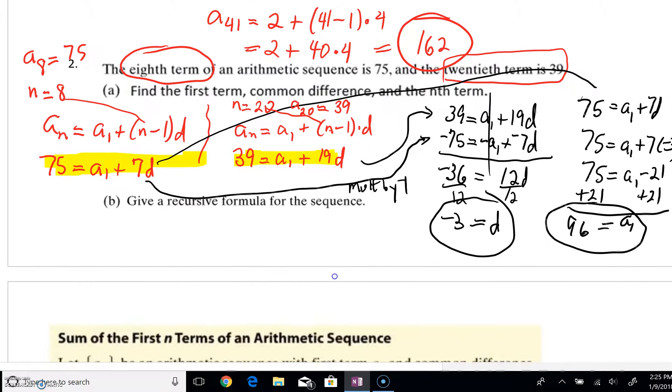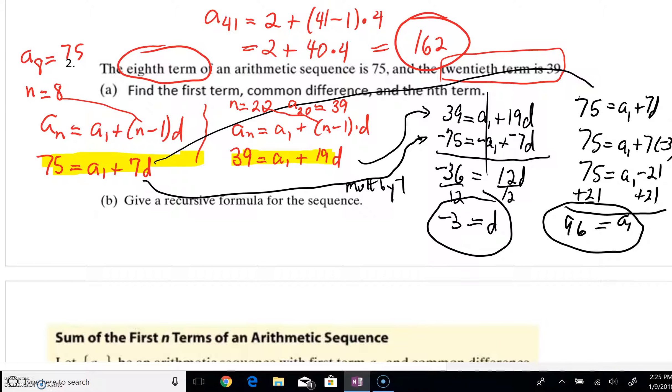Now, there is a follow-up where it says, give a recursive formula for what you just found. Well, the recursive formula, I hope you remember, you are, of course, going to have to always have a beginning. And you want to specify what your first term is. But then to get to your nth term, you want to go to the previous term. And you're going to add to that your common difference. And that right there would be the recursive formula for the sequence.